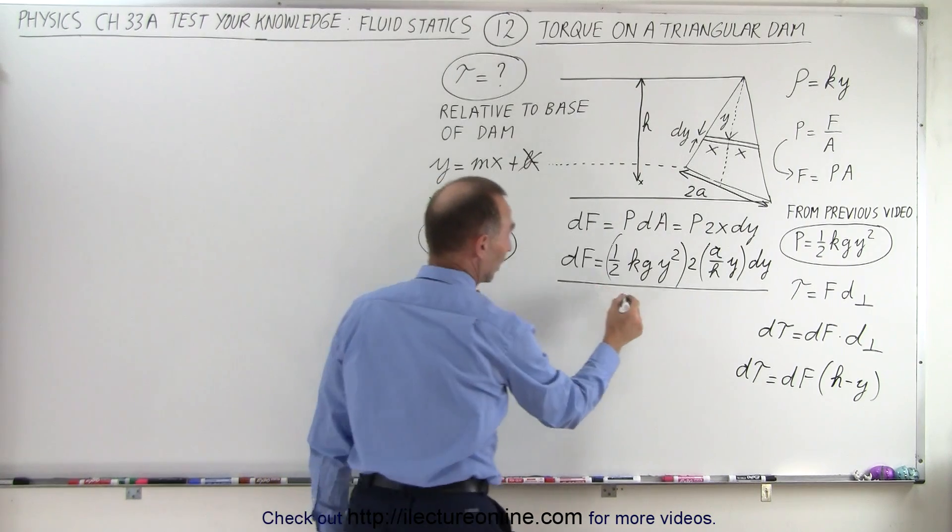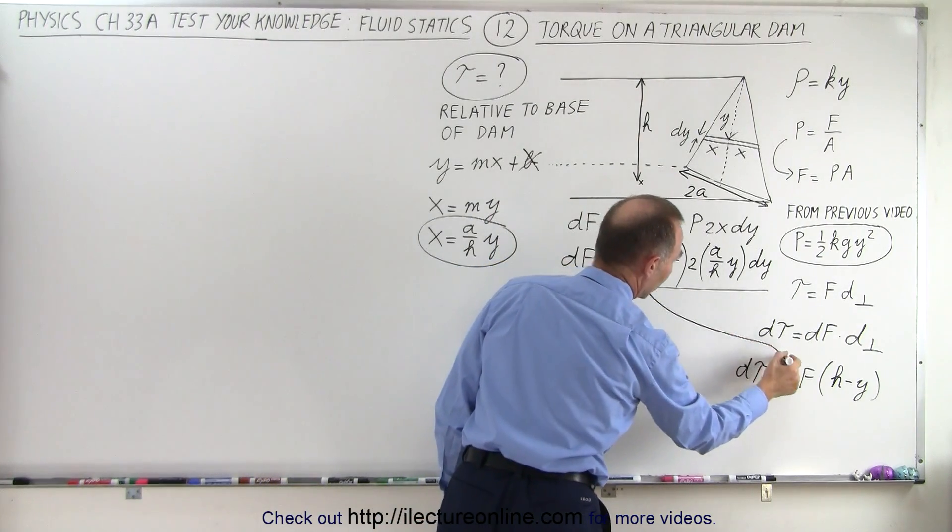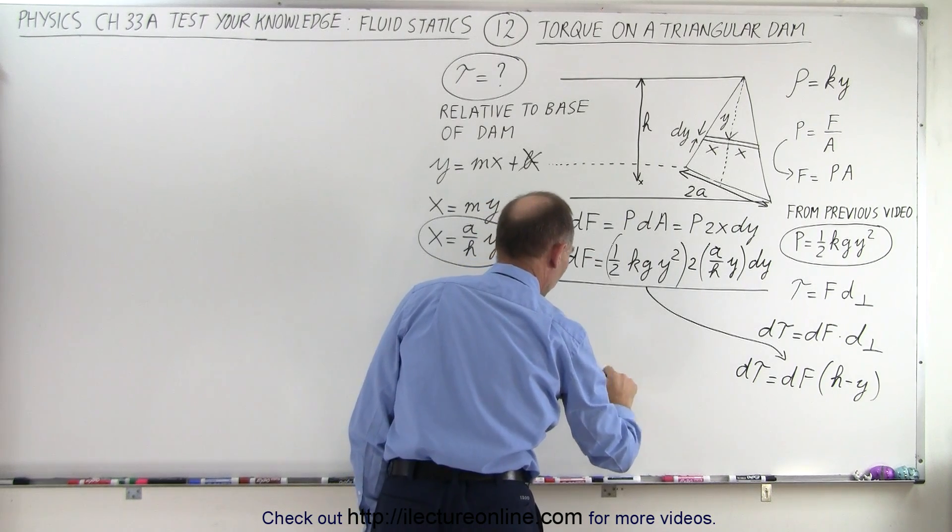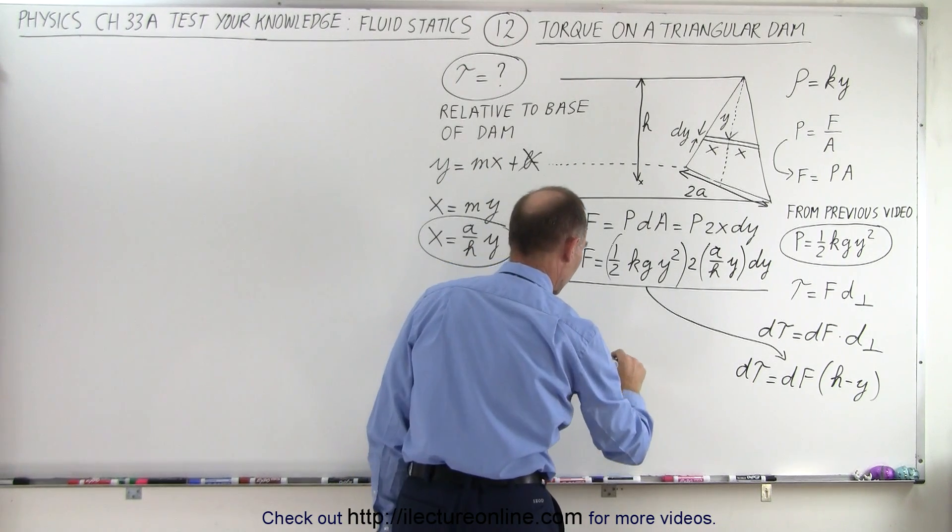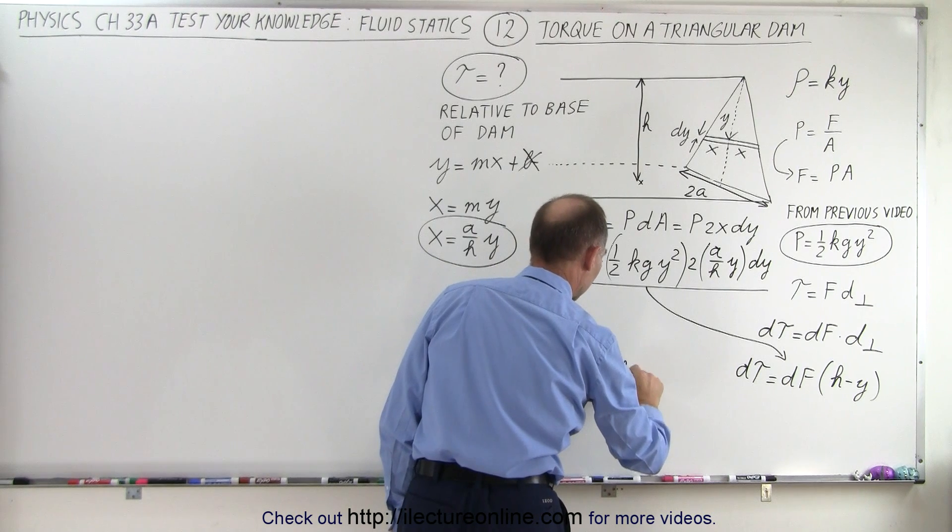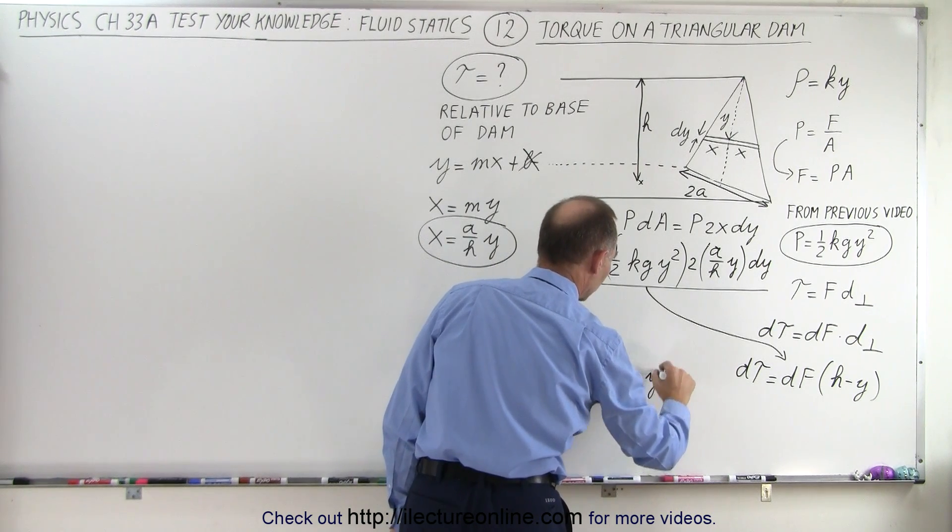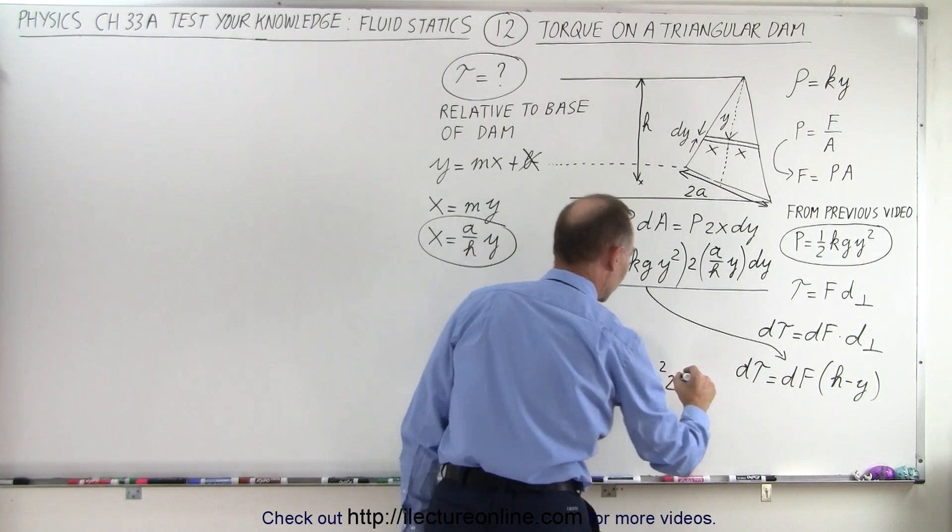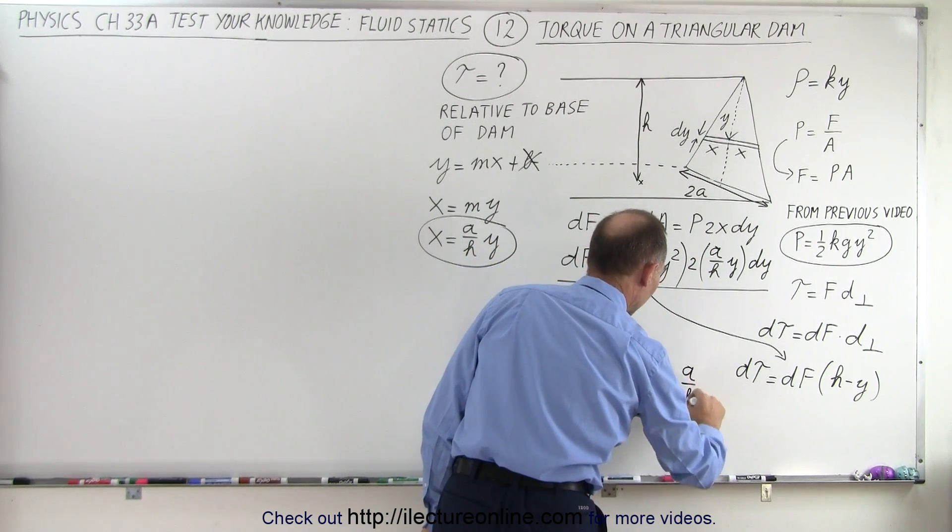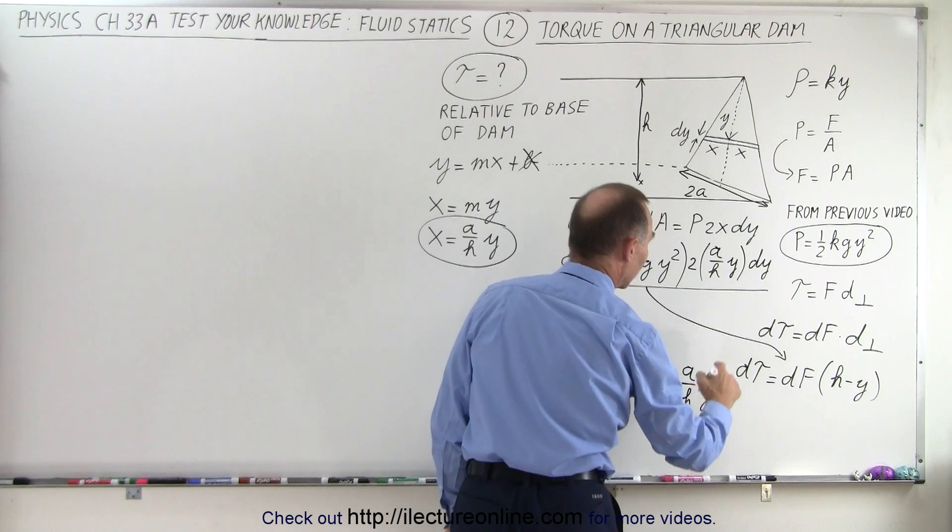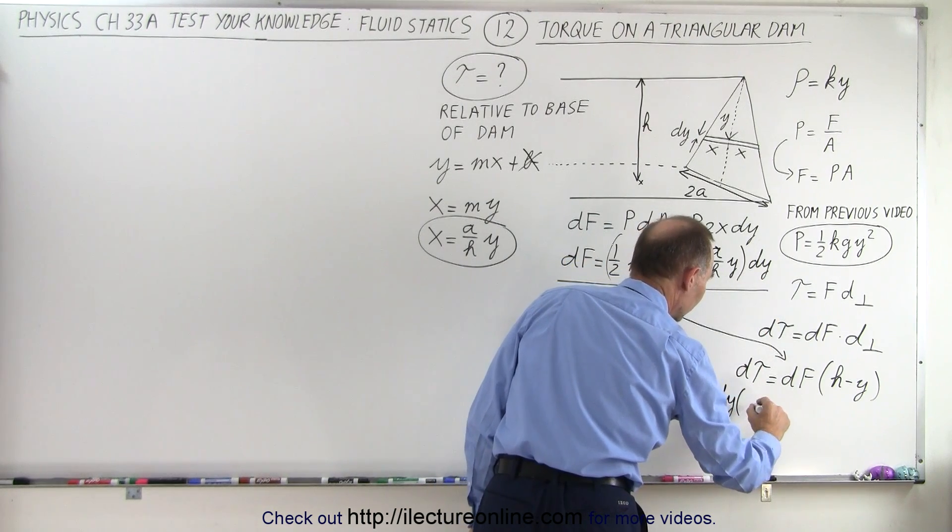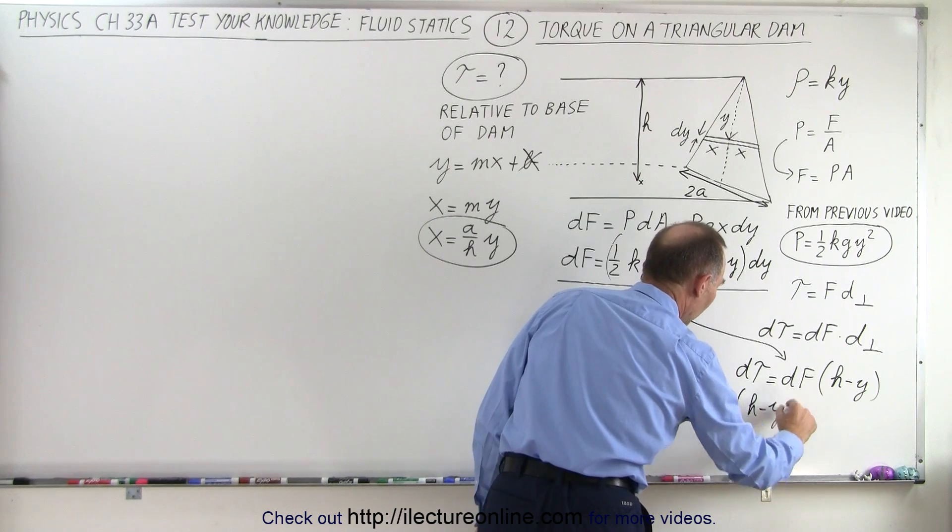And then all we have left to do is take our definition for dF and plug it into here. So now we can say that small amount of torque due to one of those strips is going to be equal to 1 half kg y squared times 2, and by the way, the 1 half and 2 cancel out, times A over H, y times dy, times H minus y.